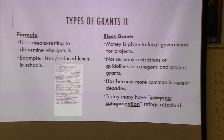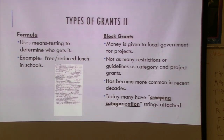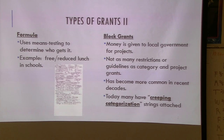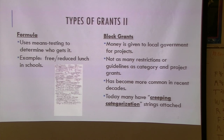A block grant has been really popular in the last couple of decades — favored by Republicans but also by Bill Clinton. Block grants give a chunk of money to local governments without many guidelines, letting them figure out the best way to use it. There aren't many restrictions like you'd have in a project or categorical grant. But you'll see the term 'creeping categorization' on AP exams — where what started as a block grant now says 'you can do what you want as long as it deals with X, Y, and Z.' So here's $2 million but it must be used on construction or environmental projects — not truly a block grant anymore.